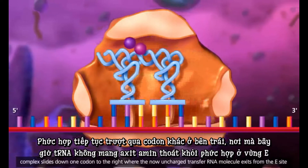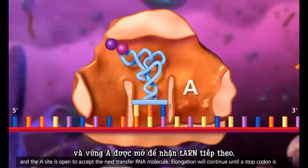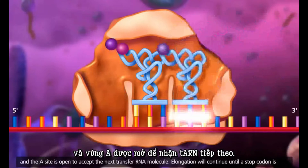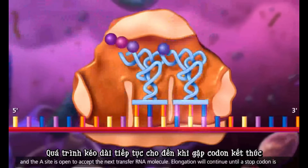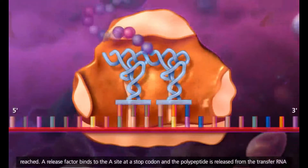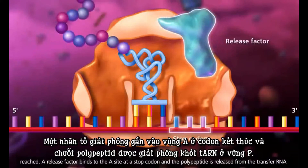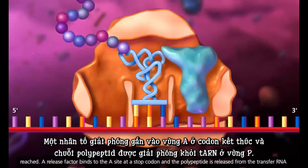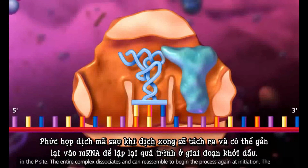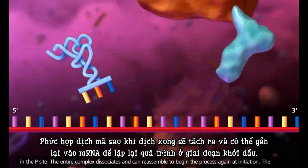The complex slides down one codon to the right, where the now uncharged transfer RNA molecule exits from the E site and the A site is open to accept the next transfer RNA molecule. Elongation will continue until a stop codon is reached. A release factor binds to the A site at a stop codon and the polypeptide is released from the transfer RNA in the P site. The entire complex dissociates and can reassemble to begin the process again at initiation.